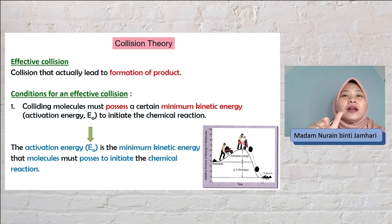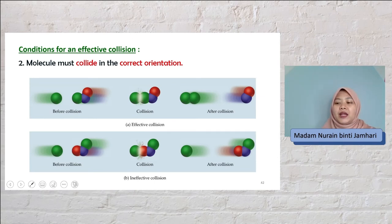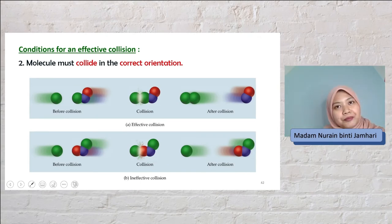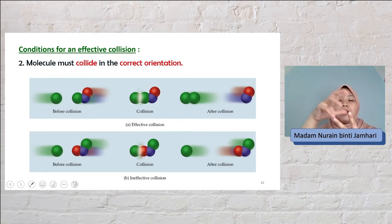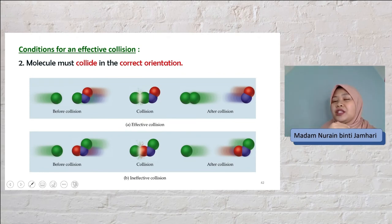That is the first characteristic of effective collision. The second characteristic is that when they collide, they must collide in the correct orientation. Even if the reactants have sufficient energy, for example 10 kilojoules, but the orientation of the collision is wrong, no product will be formed. They must satisfy both of these two conditions. If both conditions are met, then the collision is called an effective collision, which will lead to the formation of the product.